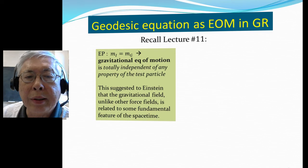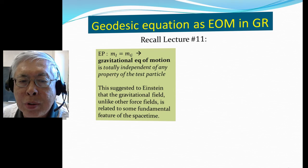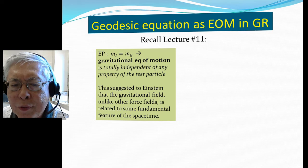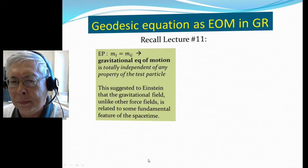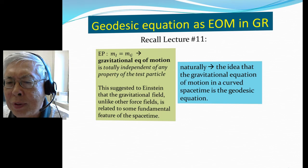When we talk about the weak equivalence principle — the fact that inertial mass equals gravitational mass — we get mass cancellation in the gravitational equation of motion. So this equation becomes totally independent of any property of the test particle. This suggests to Einstein that the gravitational field, unlike other force fields, is related to some fundamental feature of space and time. Naturally, the gravitational equation of motion is simply the geodesic equation.